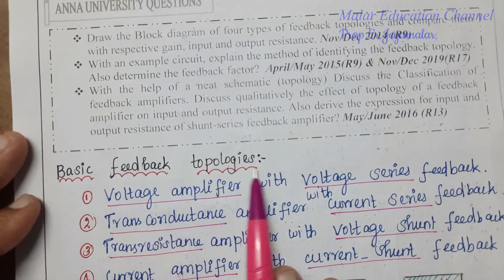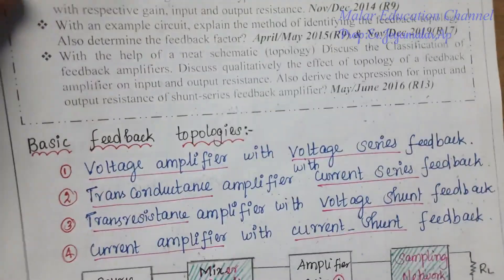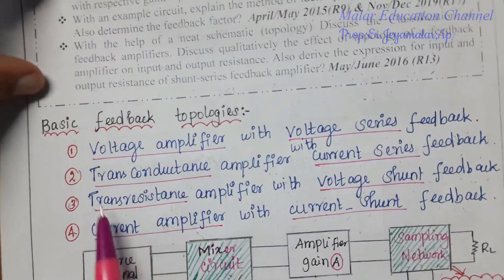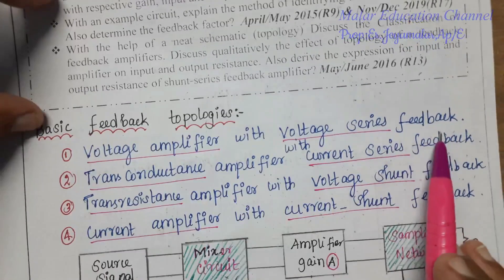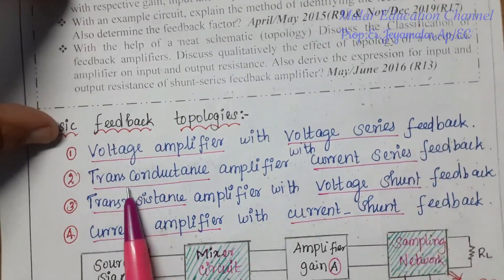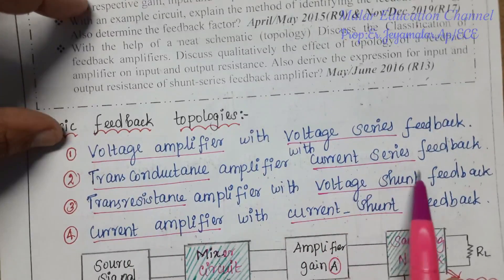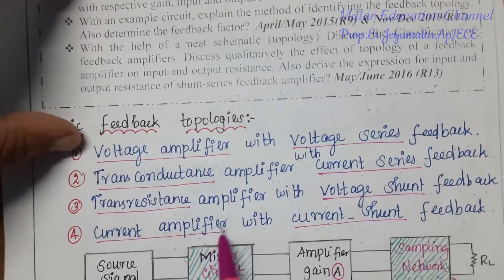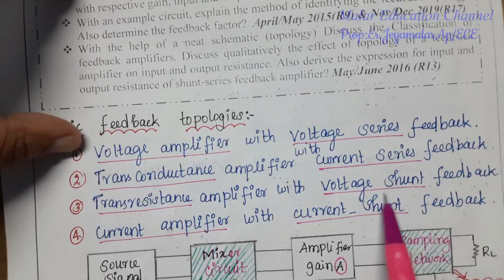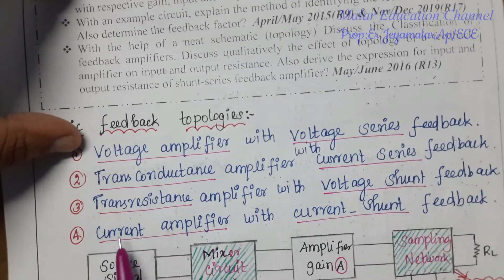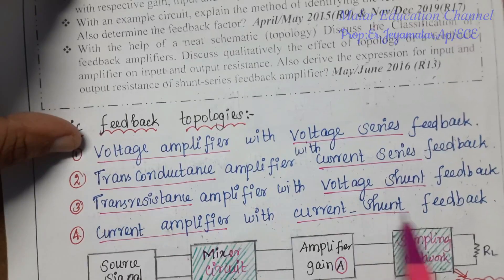Basic feedback topologies: there are four types. First, voltage amplifier with voltage series feedback. Second, transconductance amplifier with current series feedback. Third, transresistance amplifier with voltage shunt feedback. Fourth, current amplifier with current shunt feedback.